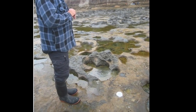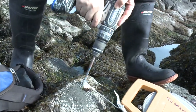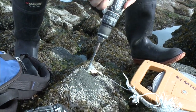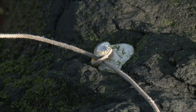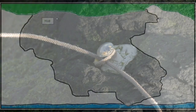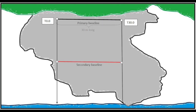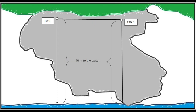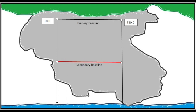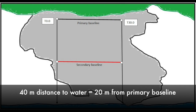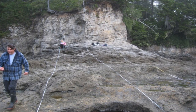To establish a permanent sampling plot that will be re-surveyed every four years, you will demarcate the survey plot by installing four pins into the rock with epoxy putty. Two of the pins mark out a 30-meter long baseline transect that runs parallel to the high water line or vegetation edge. Two more pins indicate the position of a secondary baseline, situated halfway from the primary baseline to the water line at low tide. For example, if the distance between the primary baseline and the low tide line is 40 meters, the secondary baseline and associated pins would be positioned 20 meters down from the primary baseline.